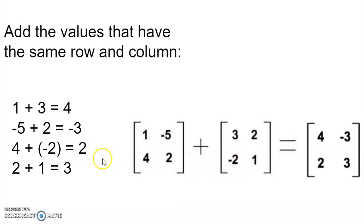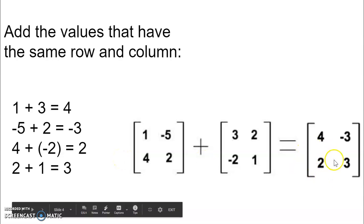So it would be four plus negative two, which is the same thing as saying four minus two. And that would give us two here, which is row two, column one. And here, where we have two and one, since it's row two, column two, these values would add together to give us three. And that would give us our final matrix.